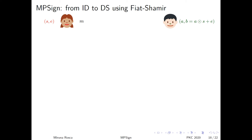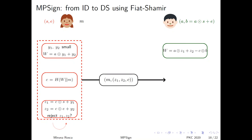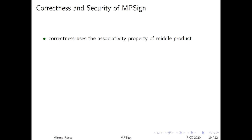When we upgrade the identification scheme to the digital signature using Fiat-Shamir, the signer acts as a prover running the identification protocol by himself. That is, when Alice wants to sign the message M, she generates Y1 and Y2. She creates W as A middle product Y1 plus Y2. She generates a challenge C by applying some hash functions to W concatenated with M. And in order to make the signature Z1 and Z2 independent on the secret key, she performs some rejection sampling before outputting the right signature. When Bob wants to verify the signature, he computes W and checks these two conditions here. The correctness proof of the protocol uses the associativity property of the middle product.